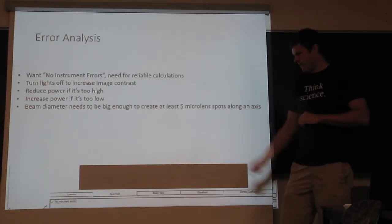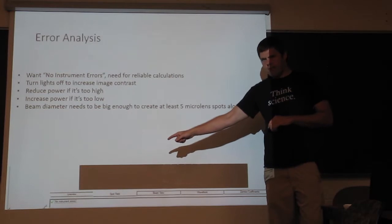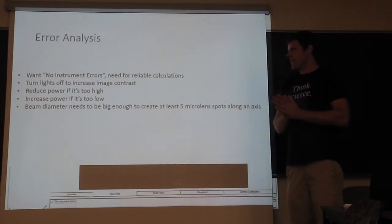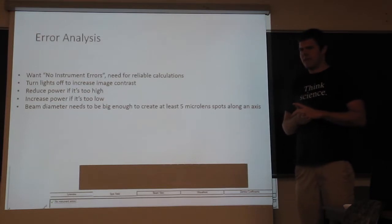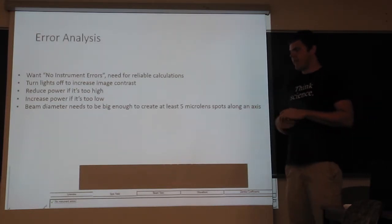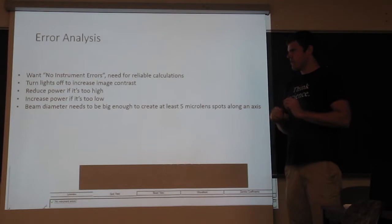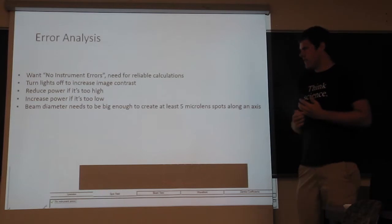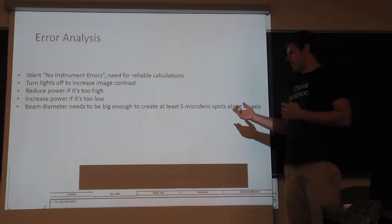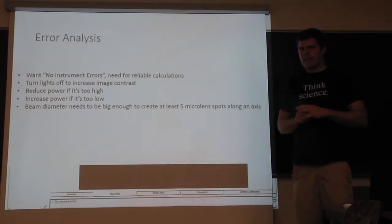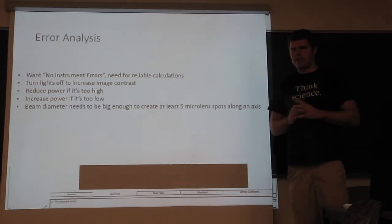There's also some errors that you need to be careful about. So in the bottom of the screen, there's a message bar and you want it to say no instrument errors in the green checkbox. If you don't get that, it's not reliable. So there's a few things that you need to be careful about. You want the lights off so there's a lot of contrast, you don't have a lot of background. You'll get a message if the power's too high, you'll get a message if the power's too low. So you need just the right power so it's very helpful if you have a way to adjust your power. And the power that you need is often only around half a microwatt, so it's not very much. Additionally, the beam diameter needs to be sufficiently large so that there's enough microlens spots in it that you can get an accurate enough calculation of the reconstruction of the waveform.